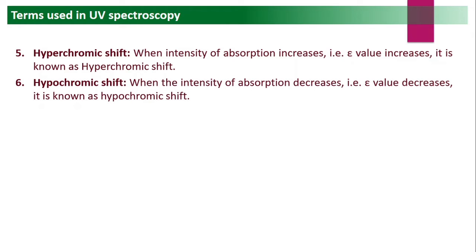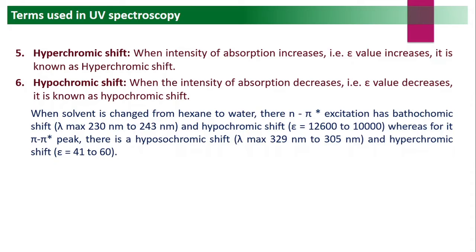The next term is hypochromic shift. When the intensity of absorption decreases — that is, absorbance or epsilon value decreases — it is known as hypochromic shift. Lambda max remains the same, but the molar absorptivity decreases and the height of the peak becomes smaller. That is called hypochromic shift.